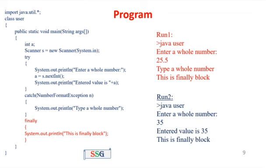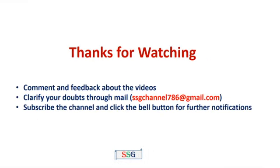Second time I run the same program: enter the whole number — input 35. No error, so a = 35, 'entered value is 35' is printed — no exception occurred. Control then transfers to the finally block and executes 'this is finally block'. Whether or not an exception is raised, the statements in the finally block will always be executed. We have now concluded the session on default exception handling mechanisms. Thanks for watching, thank you.